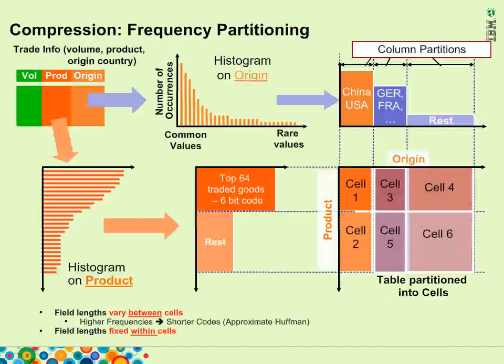The system looks for the most frequently occurring values in each of the columns — in the example, the top 64 traded goods. It then encodes those values with the least number of bits that can adequately represent the data, using approximate Huffman encoding, with the idea that most-accessed values will require the least number of bits to be manipulated. These values are then intersected with values in other columns, such as top traded goods from China and USA, and these encoded values are placed in memory cells across all available memory for subsequent scan operations.